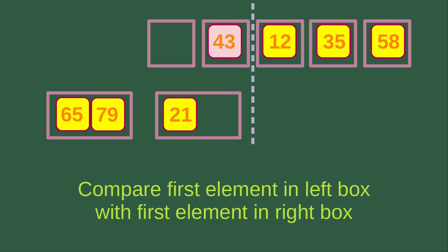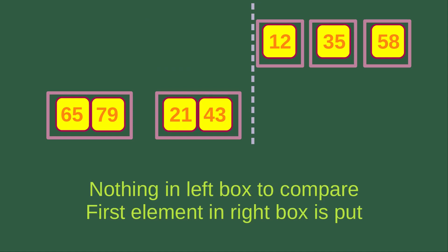Then we compare the first element in the left box with the first element in the right box again. The first element in the left box is nothing, and the first element in the right box is 43. We have nothing in the left box to compare with 43, so 43 is put into the merging box. Now we have 21 and 43 sorted in the merging box.